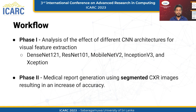Our research involved two phases. In phase 1, we analyzed the effect of different convolutional neural network architectures for visual feature extraction. The architectures we experimented with were DenseNet-121, ResNet-101, MobileNet-V2, Inception-V3, and Xception. In phase 2, we focused on medical report generation using segmented chest X-ray images, which resulted in a significant increase in accuracy. This approach involved the use of image segmentation and morphological post-processing as precursors to the report generation workflow. The resulting system demonstrated the potential for automated chest X-ray report generation as a supportive tool to assist radiologists in diagnosing lung conditions.